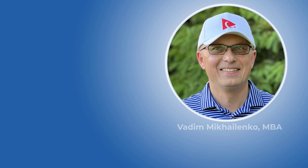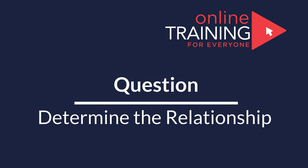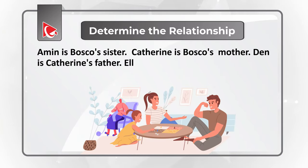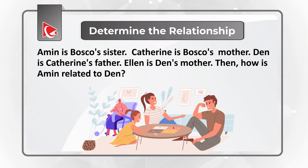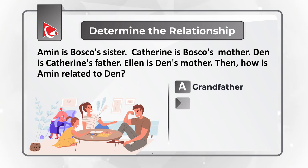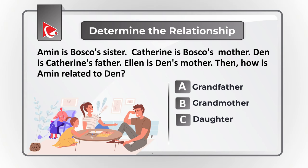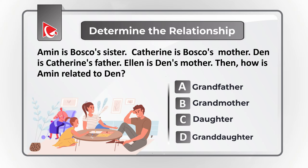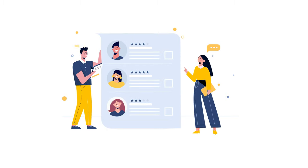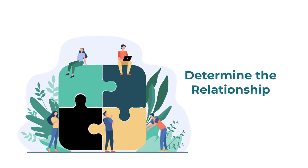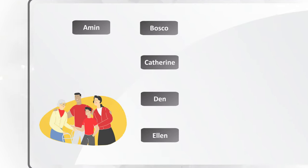Here's a challenge where you need to determine the relationship between family members. Amin is Baska's sister; Katherine is Baska's mother; Dan is Katherine's father; and Alan is Dan's mother. How is Amin related to Dan? Choices: A) grandfather, B) grandmother, C) daughter, or D) granddaughter. The easiest approach is to build a diagram.